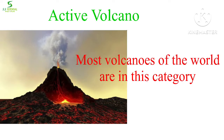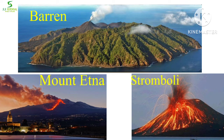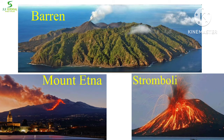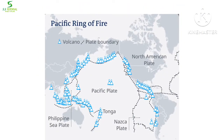Most volcanoes fall under the active category. Mount Etna in Sicily island, Stromboli in Lipari island, and Barren in India are some examples of active volcanoes. Most active volcanoes are found around the Pacific Ocean, which is why it is called the Pacific Ring of Fire.